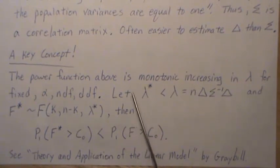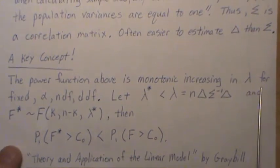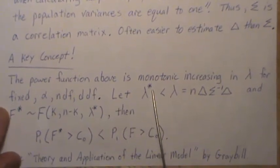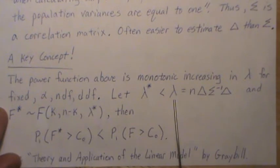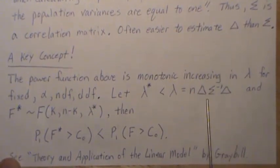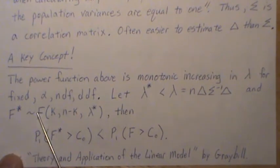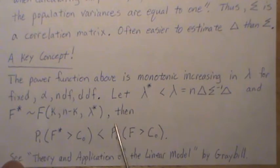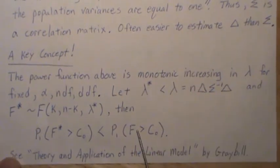And the key concept is this: the power function is monotonic increasing in lambda. So for a fixed alpha numerator denominator degrees of freedom, if we let lambda star be strictly less than lambda, and this lambda is chosen because it's the non-centrality parameter for this test, and f star is distributed with a non-central f distribution with this lambda, now the numerator and denominator degrees of freedom are the same, then the power function for this f is less than the power function for the Hotelling's T-squared test.